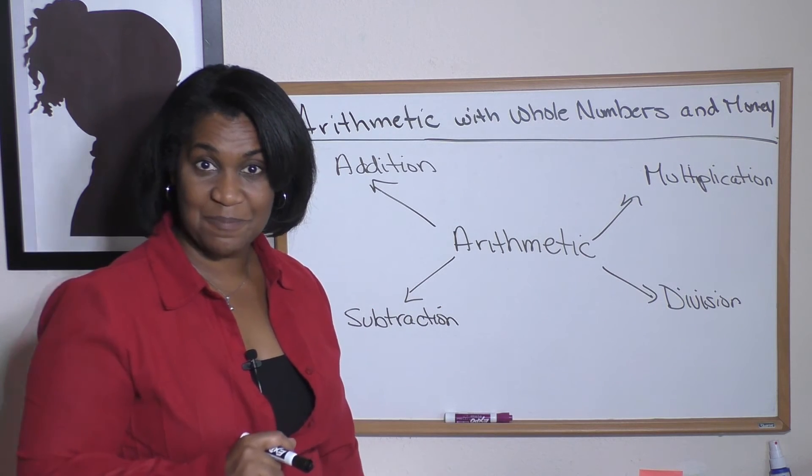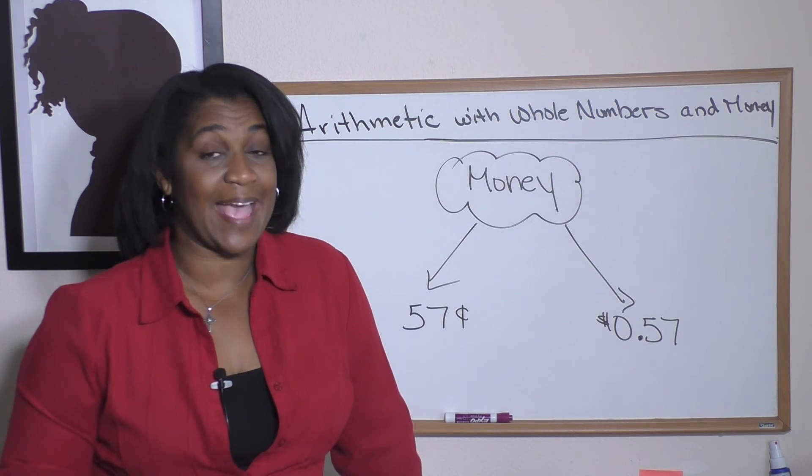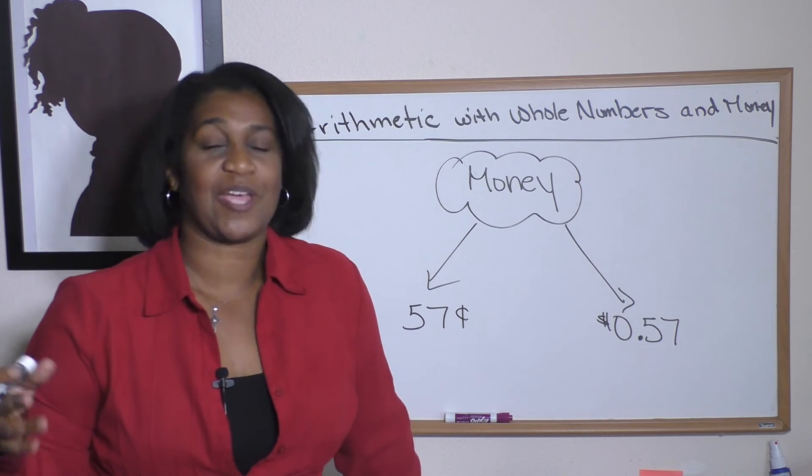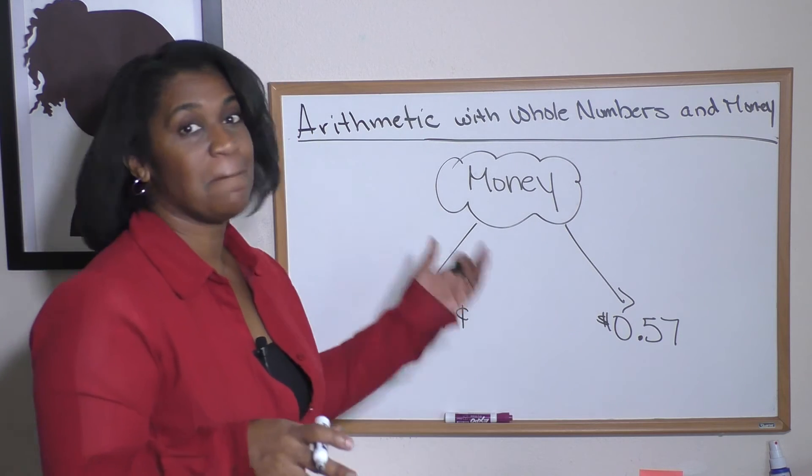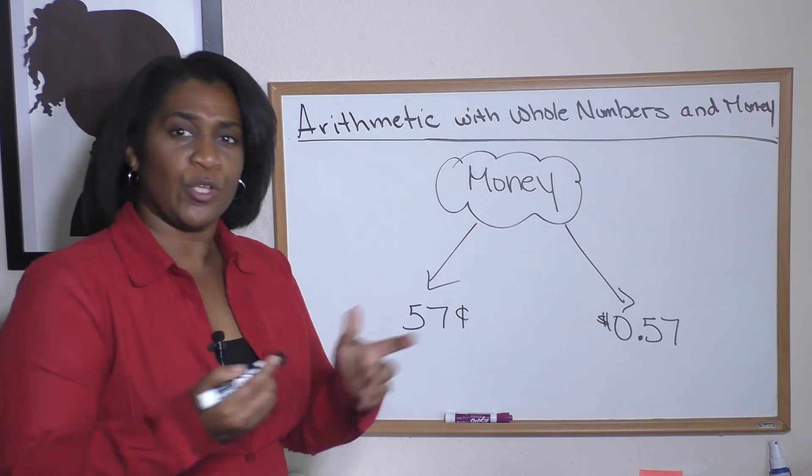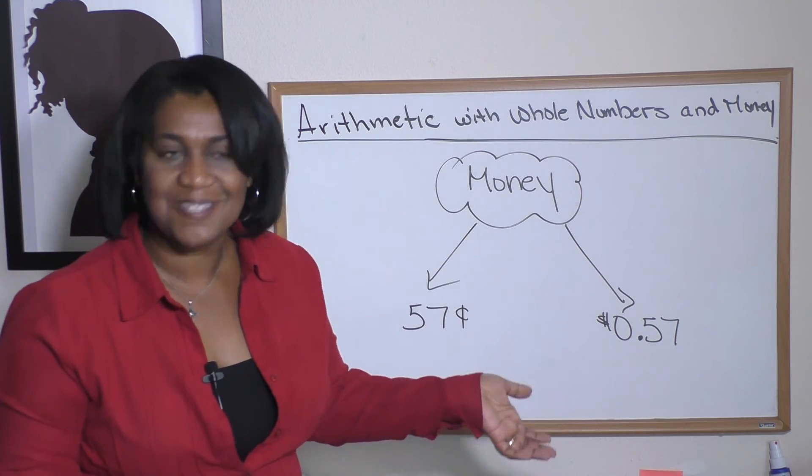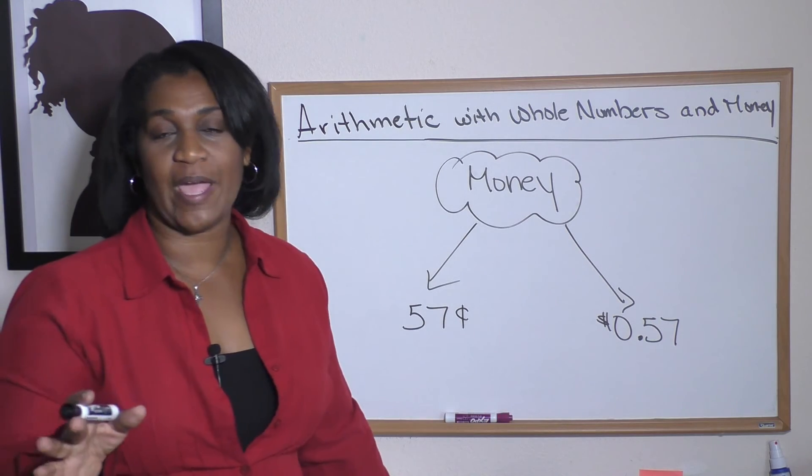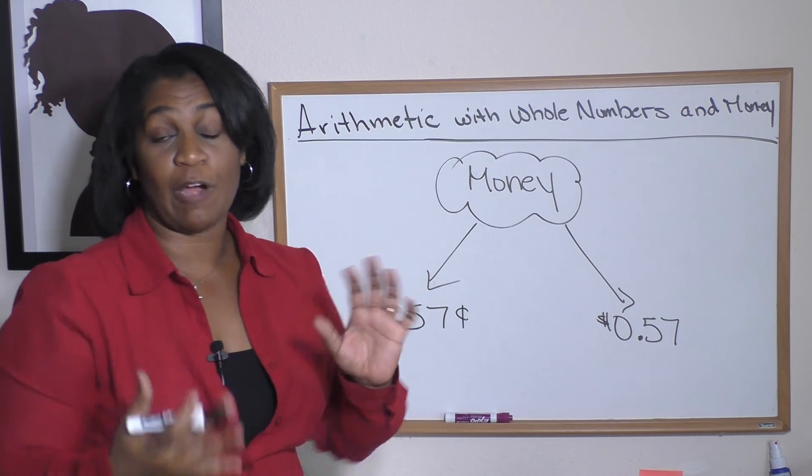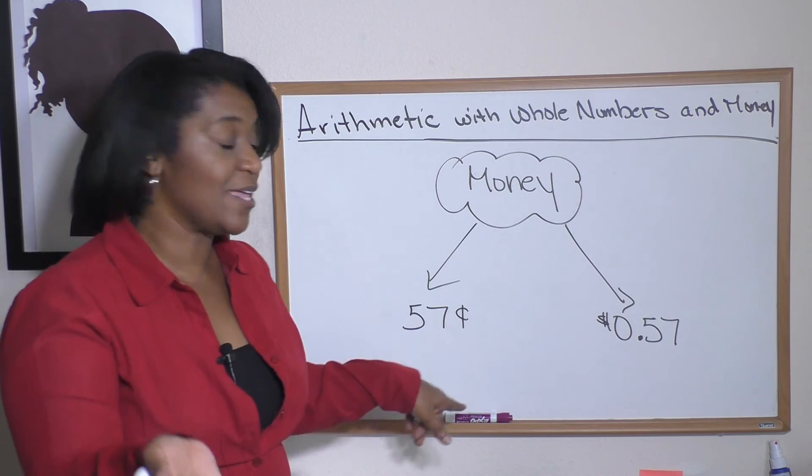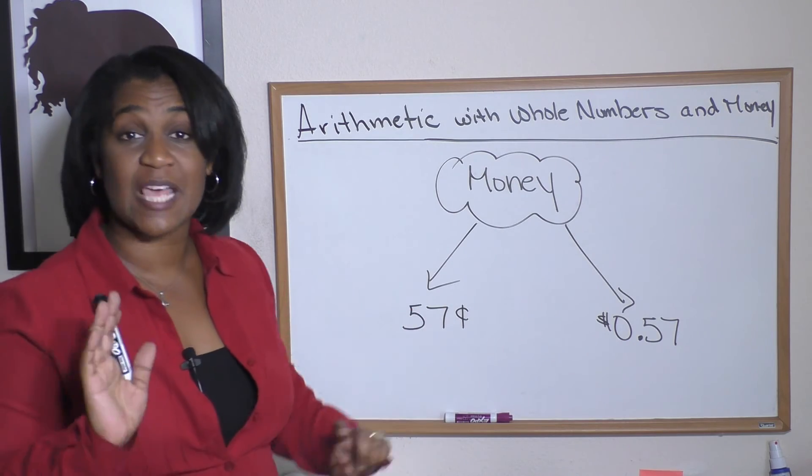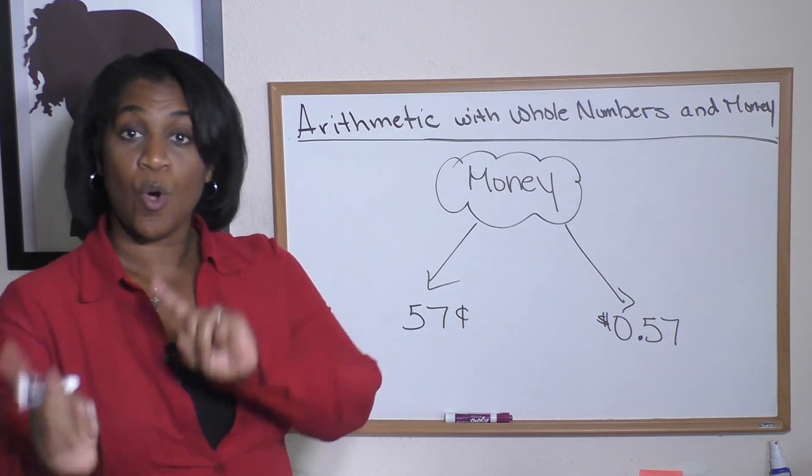The last thing I want to show you before we move on to actually doing arithmetic are some terms regarding money. I'm sure you're familiar with the term cent. Well, there are a couple of ways—two ways—to indicate things regarding money and cents. Let's say we had 57 cents. We could do 57¢; that's one way to do it. Or we could write it in terms of dollars, which would be $0.57.